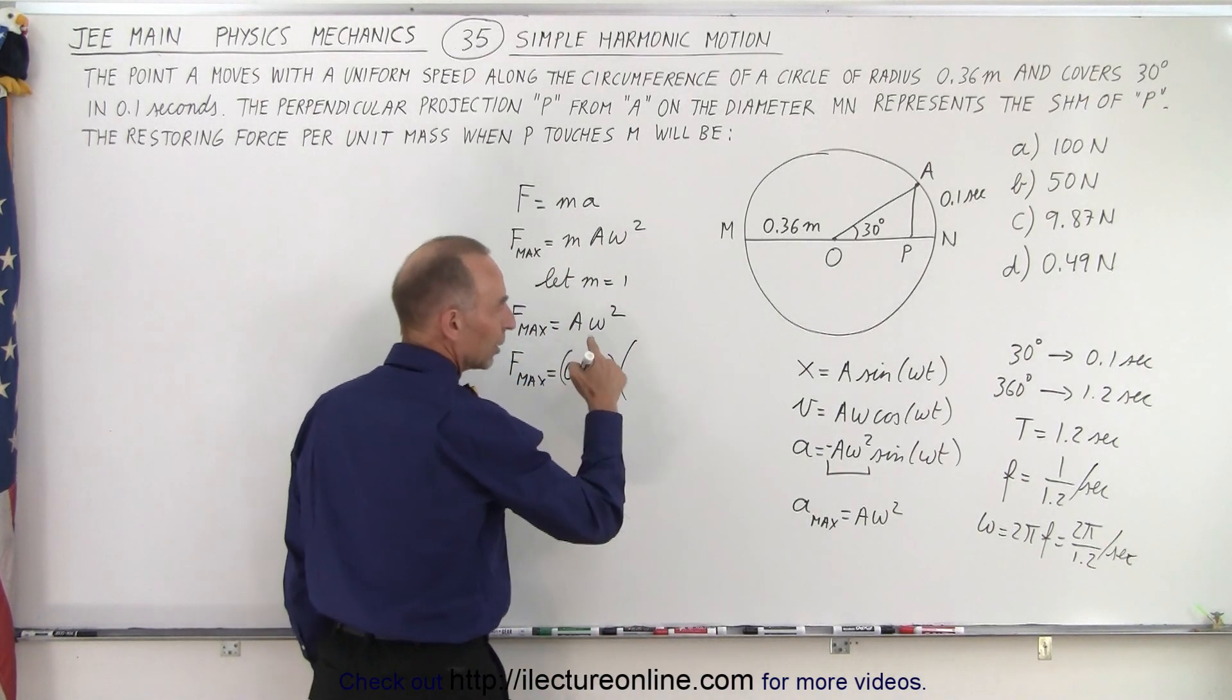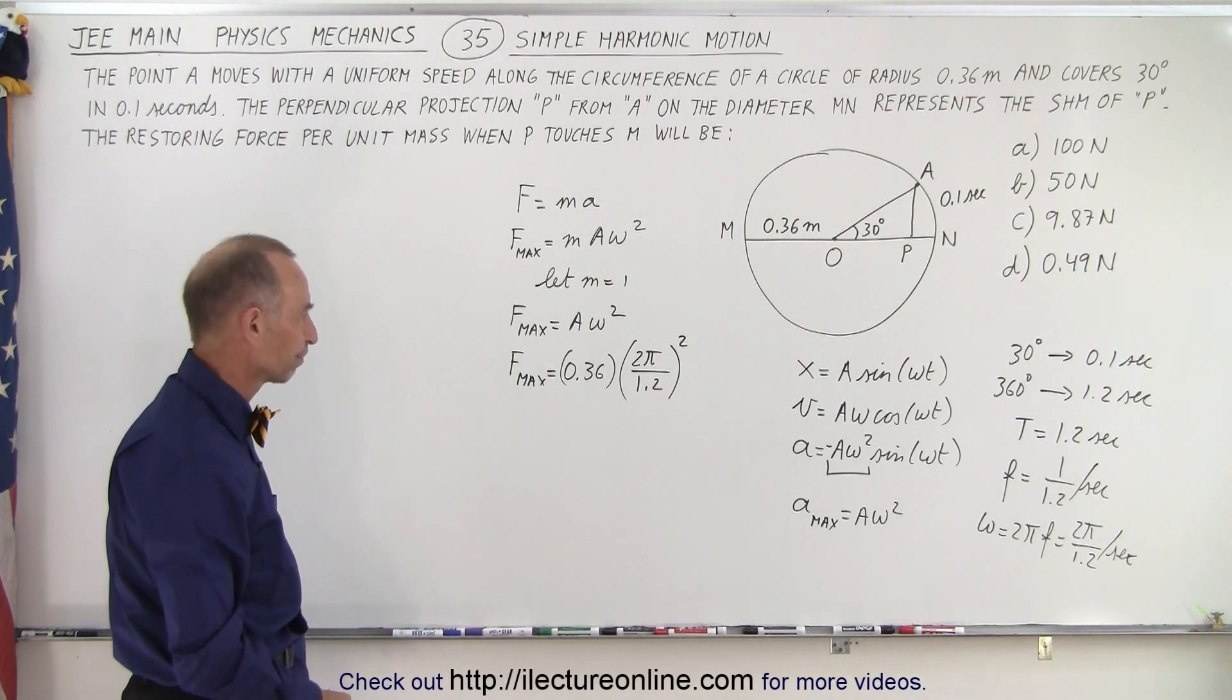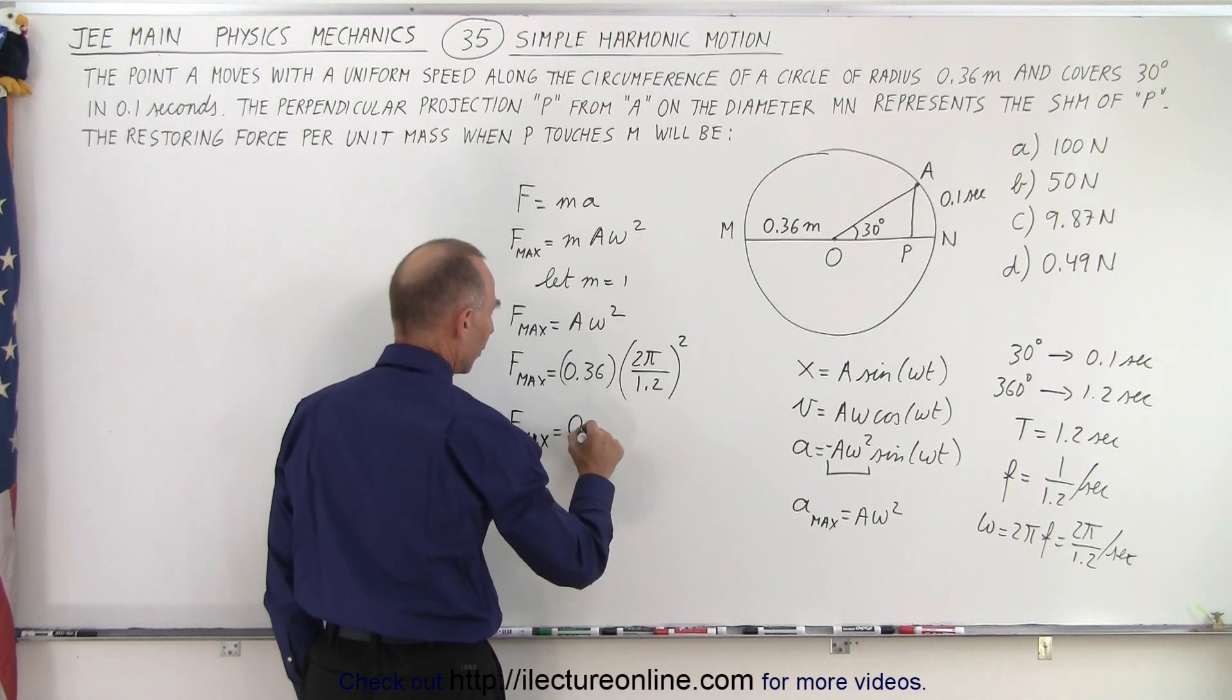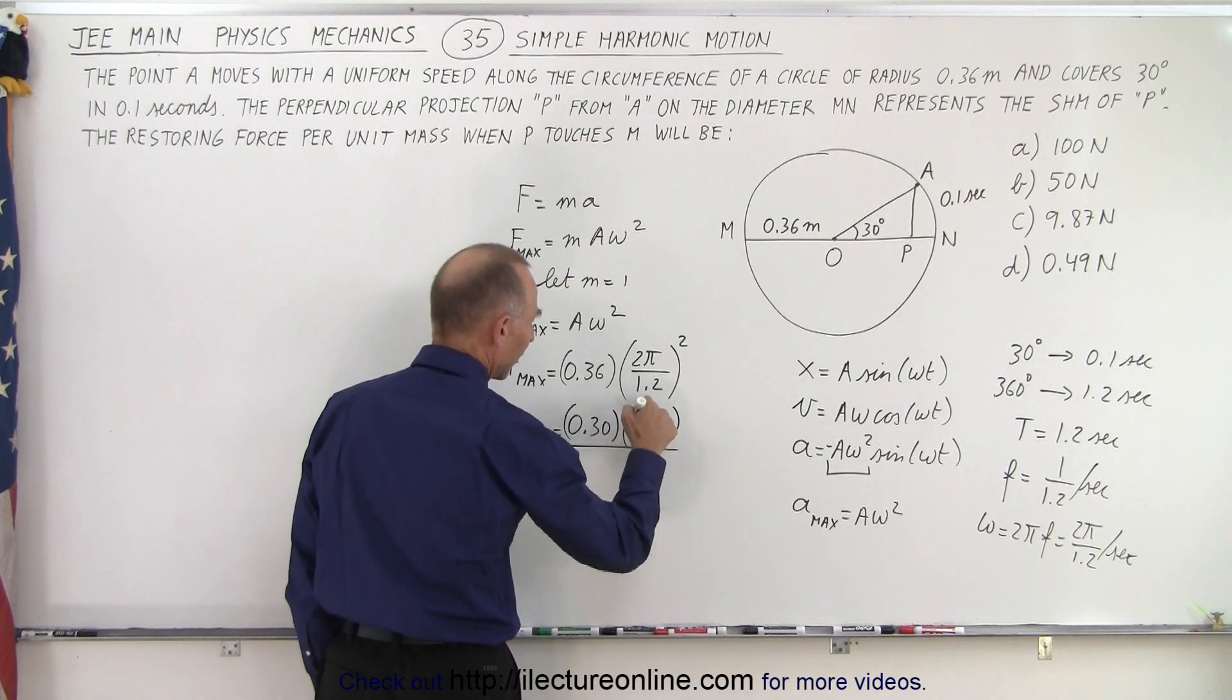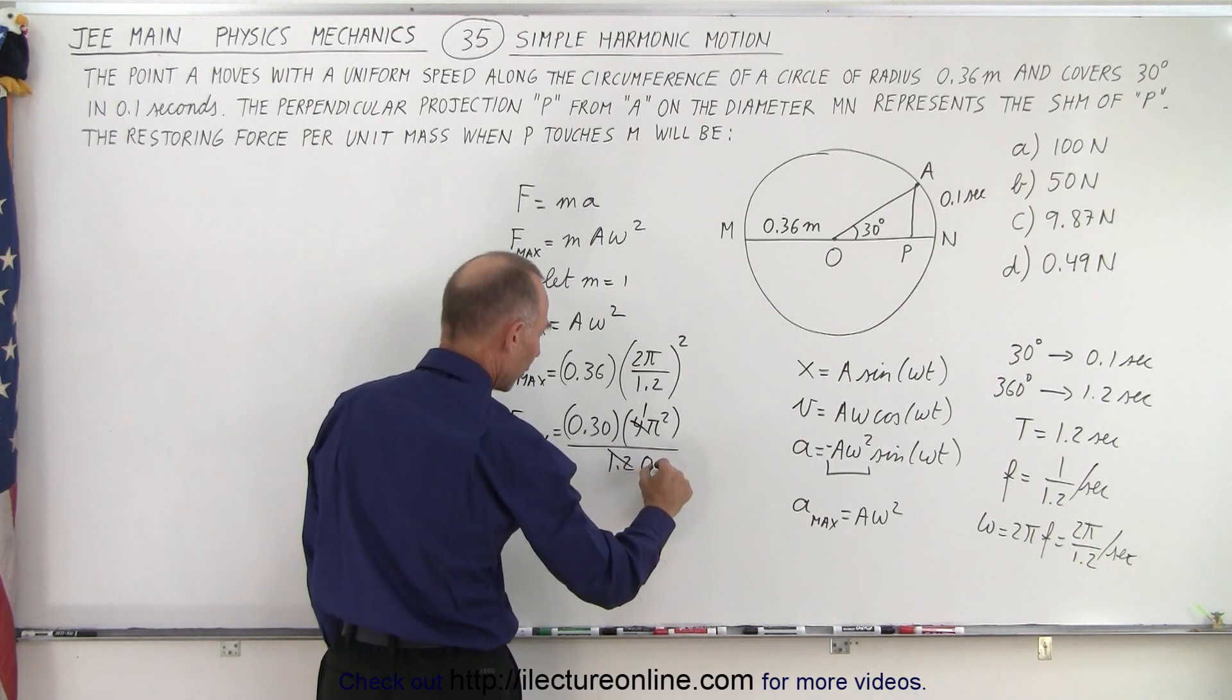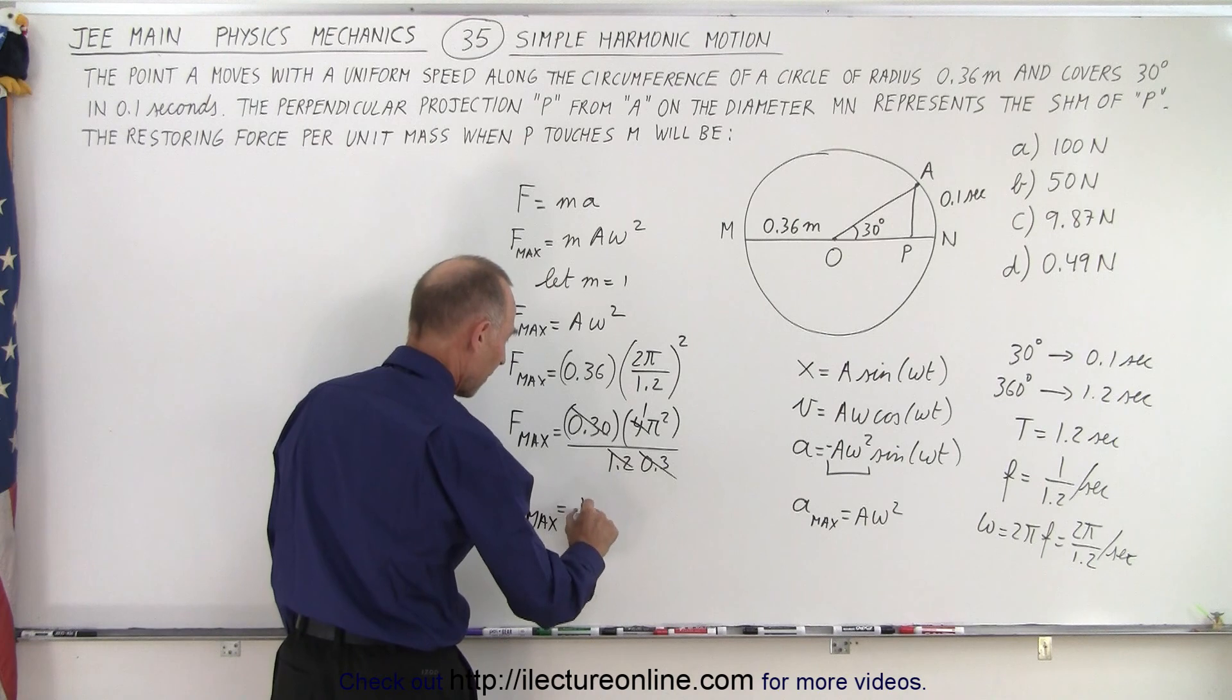So that means over here, we have the quantity Omega, which is 2 pi divided by 1.2, and that will be squared, and we'll leave the units off to make it easier to work with the numbers. Well, now notice that we have a 1.2 squared here. We have a 0.36 that goes in there quite nicely. So we can say that F max is equal to 0.30 times 4 pi squared divided by 1.2. And then we see a 4 and a 1.2. We can make that a 1 and make this a 0.3. Wow, look at that. That works out quite nice. And then we have a 0.3 and a 0.3. That cancels out. And so we can say that F max is equal to pi squared.